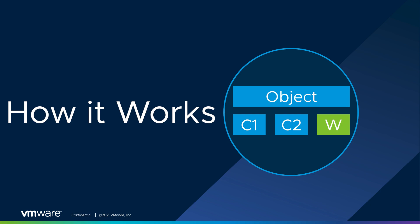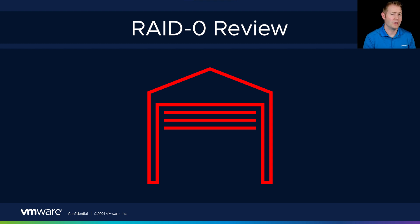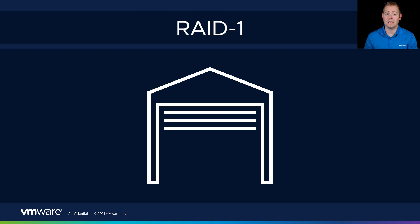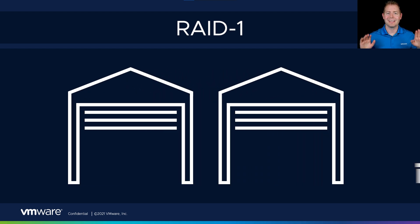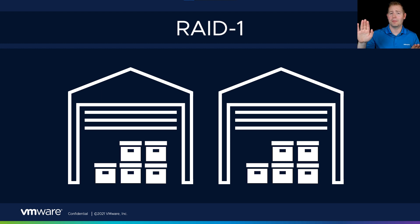Let's talk about our RAID 1 FTT of 1 policy first. Let's say we have our data stored in warehouse 1 — that's our only copy of the data. If something were to happen to that warehouse, whether that's fire, theft, flood, or something else, we would lose access to that data. That's kind of like our RAID 0 policy. Our RAID 1 policy says let's mirror that in multiple locations — let's have two copies. Translating that into vSAN, we'd have a copy on host 1 and a copy on host 2.